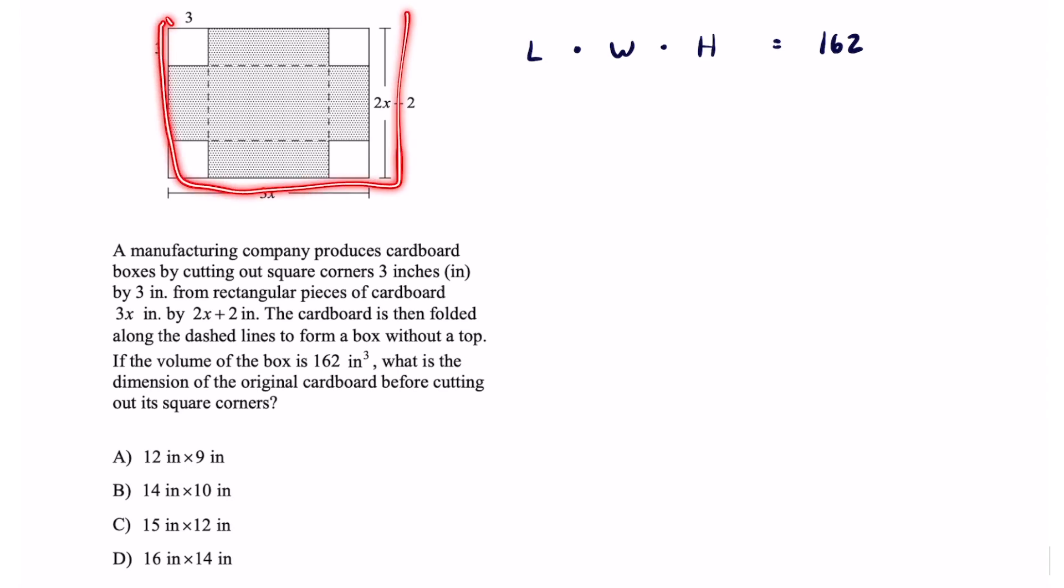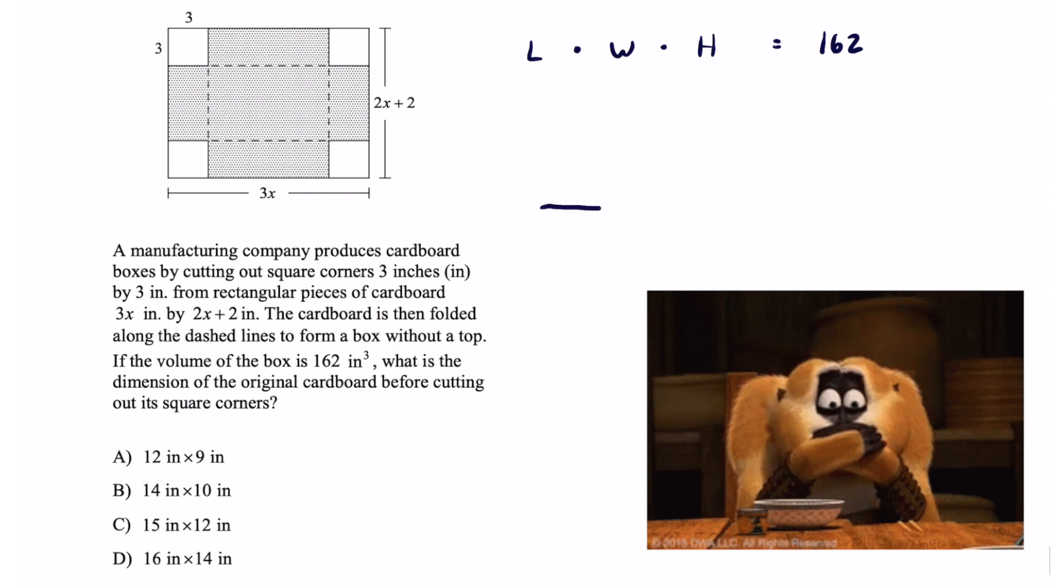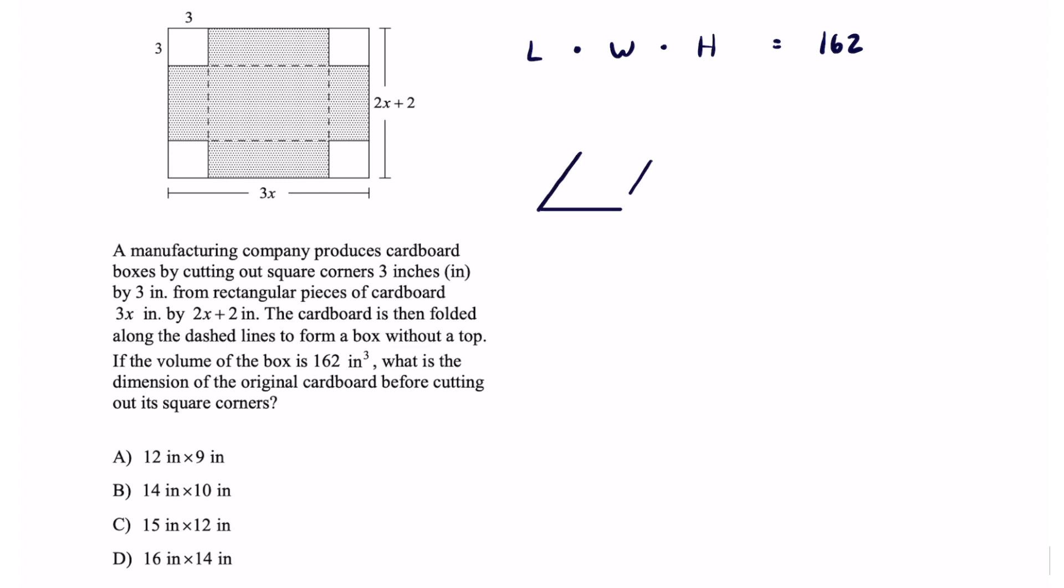If I take this rectangular prism and fold it up it's going to look something like this. Don't make fun of my drawing. I'm going to try my best to illustrate a rectangular prism. If I fold this up on the dotted lines the easiest one to identify is the height. It's going to have a height of three units.